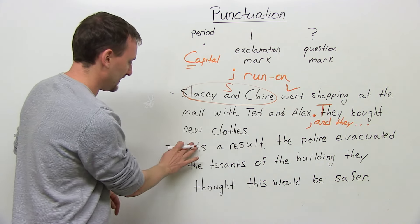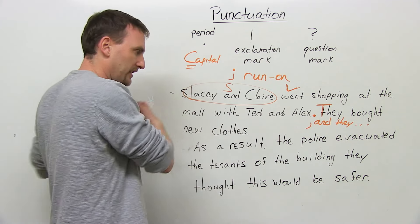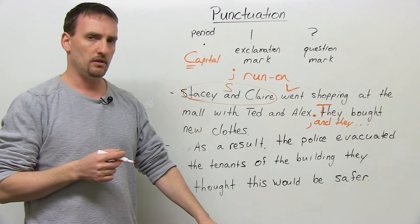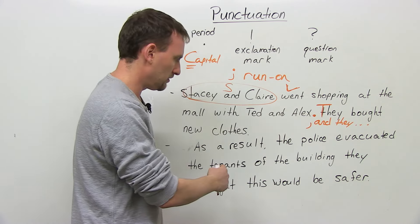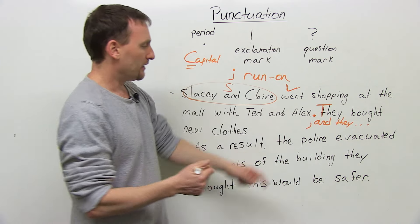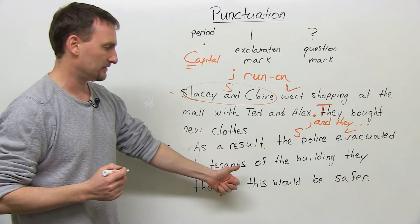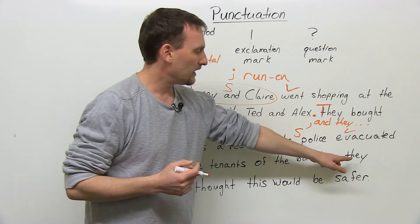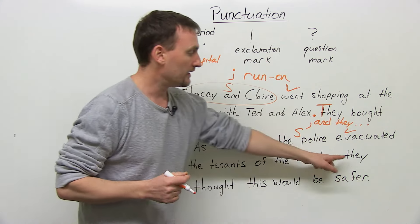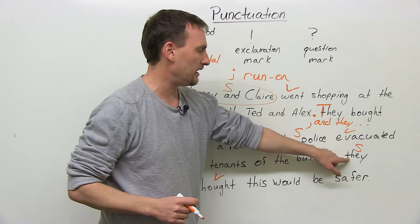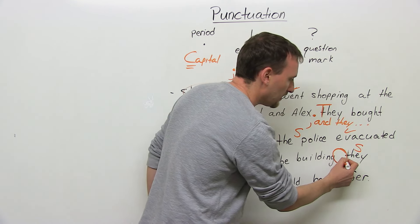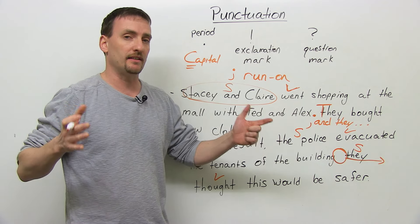Just to make sure, here's another sentence. Something came before: "As a result, the police evacuated the tenants of the building they thought this would be safer." Where does the sentence end? Where does the idea end? The police evacuated — who? The tenants. Which tenants? Of the building. "The building they thought this" — no. "The building that they thought this" — no, doesn't make sense. So this must be the next subject: they thought. Who are they? The police. They thought what? This would be safer. I need to put something here to break up these two sentences.